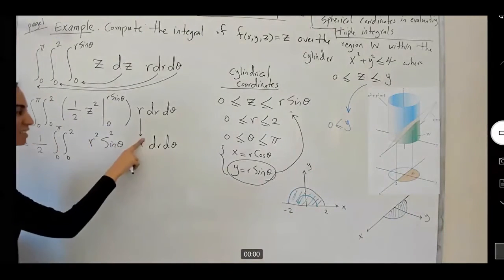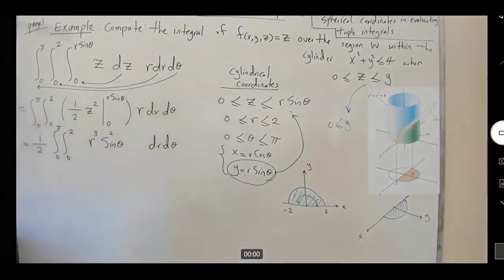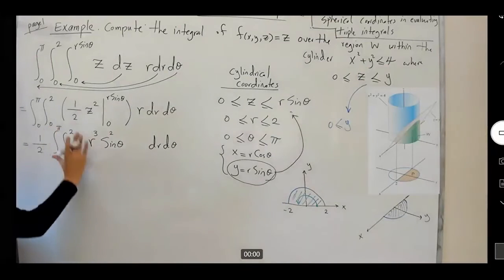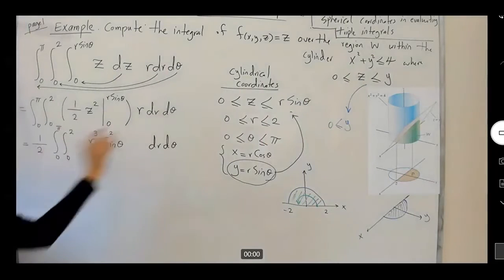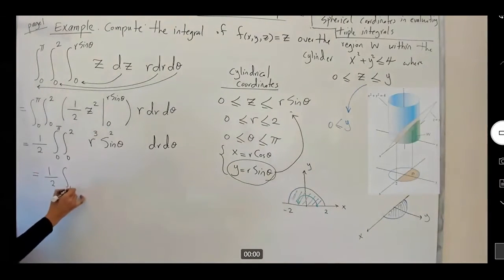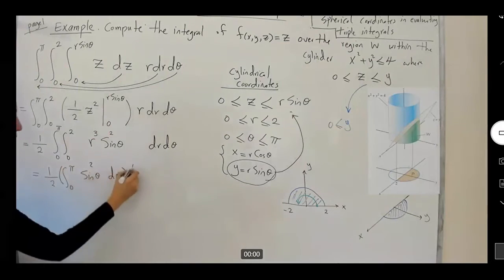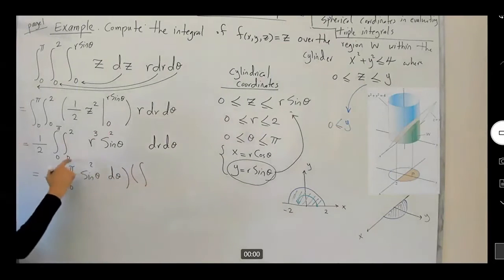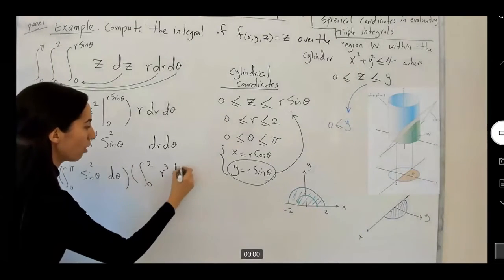R times r squared gives me r cubed. Perfect. Again, you can say that, I have fixed boundaries. I have r cubed and it's multiplied by sine squared. So, I can separate these. I have a half integral 0 to π, sine squared theta, dθ, multiplied by integral 0 to 2, r cubed, dr.